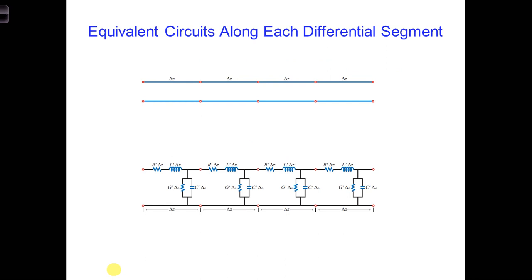The full transmission line model is comprised of cascading equivalent circuits along the length of the transmission line, which you can see on the bottom of the screen. Now, if we want to apply this equivalent circuit for a transmission line to the actual wires in the airplane, we would need to know what to use for L'', C'', R' and G'.